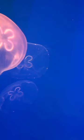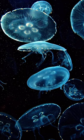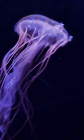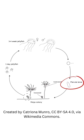The life cycle of a jellyfish begins with a medusa. Medusas are adult jellyfish that are able to reproduce. They release eggs and sperm into the water, where they fertilize and become planula larvae. Planula larvae are tiny, free-swimming organisms. They eventually settle on the ocean floor and transform into polyps.